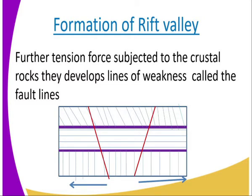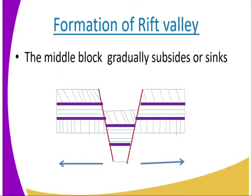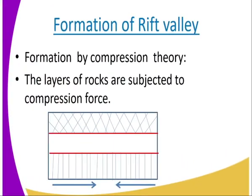These are what we refer to as the normal fault lines. They are diverging away from one another, which is why we refer to it as the tension force. The middle block gradually subsides or sinks. When the side blocks are moved away from one another, the central block sinks, as seen in the diagram, resulting in the rift valley.